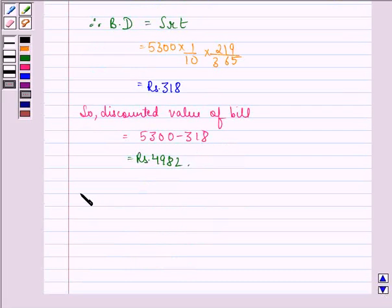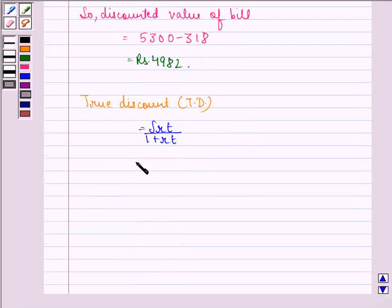Now, true discount or TD equals SRT divided by 1 plus RT. That equals 318 divided by 1 plus 1 upon 10 times 219 divided by 365, which is further equal to 318 times 10 times 365 divided by 3650 plus 365 plus 2190.